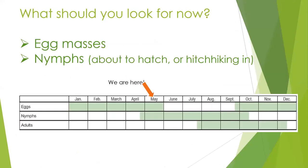Here we are on the spotted lanternfly calendar. Right now on May 18th, we're stuck right between looking for egg masses and waiting for the nymphs to hatch. Nymphs have not hatched in the New England area yet, but they're about to, especially with the ridiculously warm temperatures and above-average forecasts for May. But you should be learning about nymphs because they've hatched south of us in Pennsylvania and Virginia, and they could possibly be hitchhiking in on vehicles or shipments coming into Massachusetts from those states.